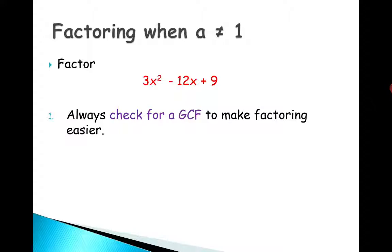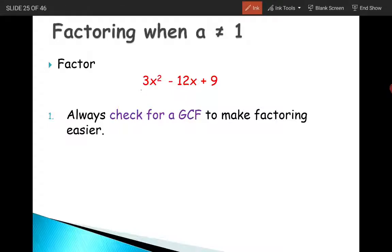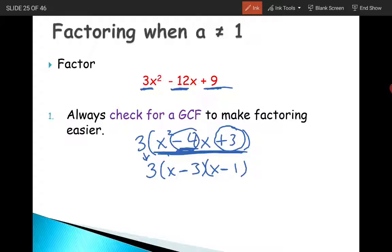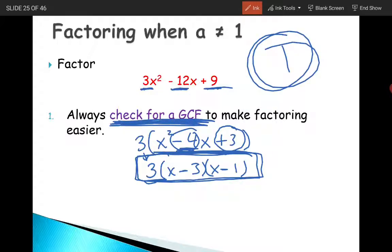The first thing you have to do — which so many people forget because they go on automatic mode — is always check if you can factor out a greatest common factor. Here I have a three, so I can take out a three, leaving three times (x squared minus 4x plus 3). Then I can factor that into (x minus 3)(x minus 1). Don't forget to bring that three down — leaving it out is wrong. That's the first thing: always check the GCF.